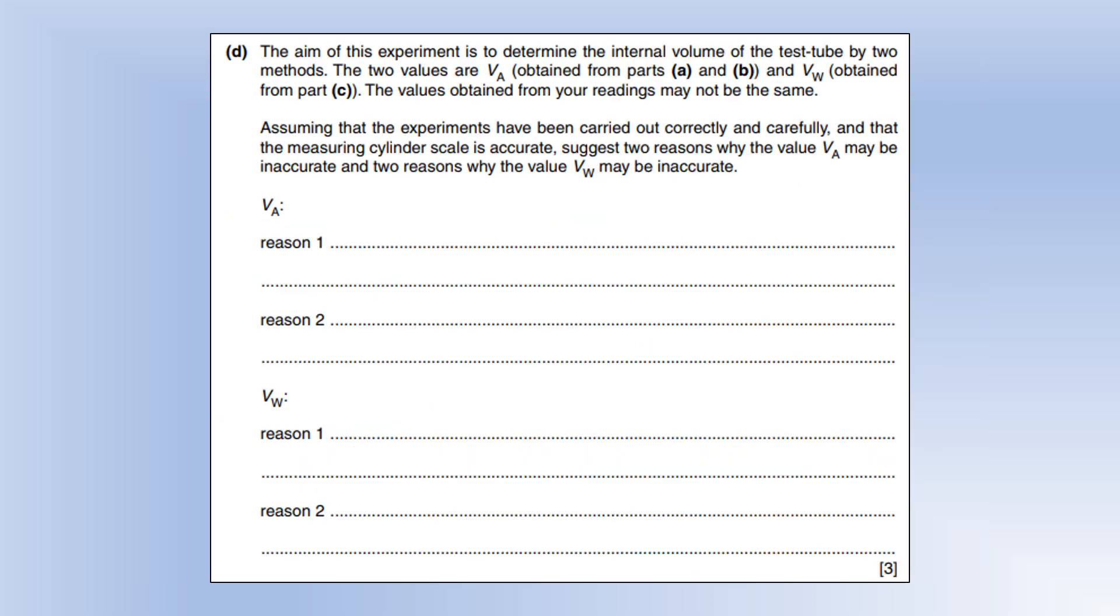There are possibilities of sources of inaccuracy. Suggest two reasons why the volume of air using the first method may be inaccurate. With the first method, you have to push the test tube underwater, which means my finger is also slightly underwater, and that increases the volume that I measured. So the volume is probably slightly too big.